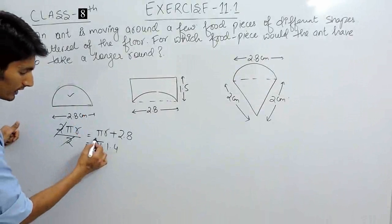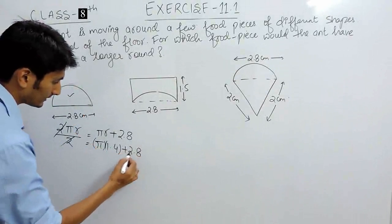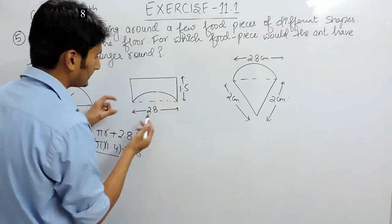clearly the radius should be 1.4 and this is 2.8. In this case also, if you want to find the perimeter,